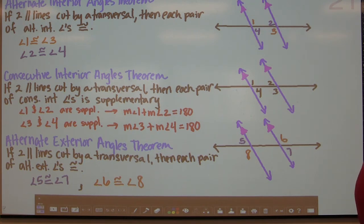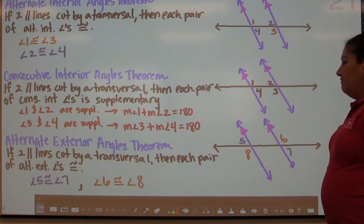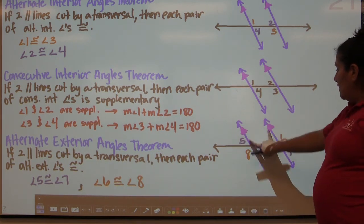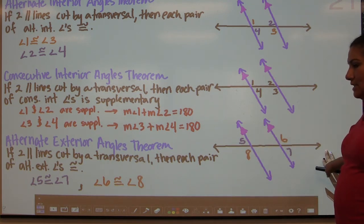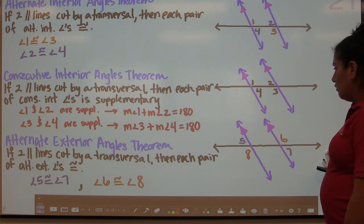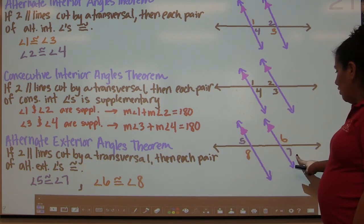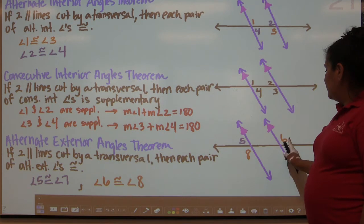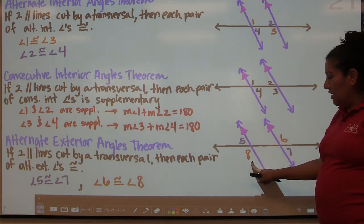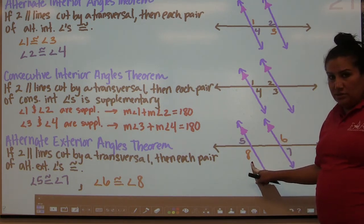And then we have the alternate exterior angle theorem. Like the alternate interior angle theorem, with two lines parallel cut by a transversal, each pair of alternate exterior angles is also congruent. They're color-coded: angles 5 and 7 are alternate exterior and therefore congruent; angles 6 and 8 are alternate exterior and therefore also congruent.